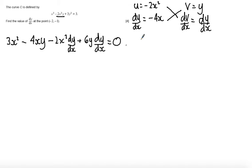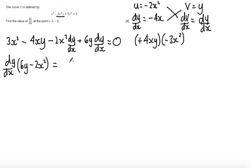So what I'm going to do is collect terms dy by dx on the left-hand side and the other terms on the right-hand side. First of all, I'm going to add 4xy to both sides of the equation, and I'm going to subtract 3x squared from both sides of the equation. Second thing I'm going to do is factorise the dy by dx out of the terms which contain it. It's going to leave me with 6y minus 2x squared. Equal to, I added 4xy to both sides, and I subtracted 3x squared from both sides.